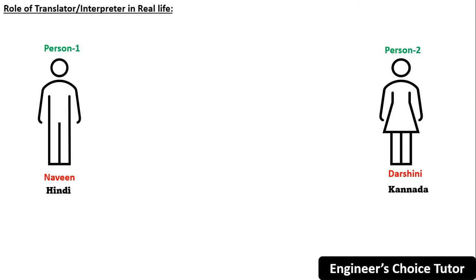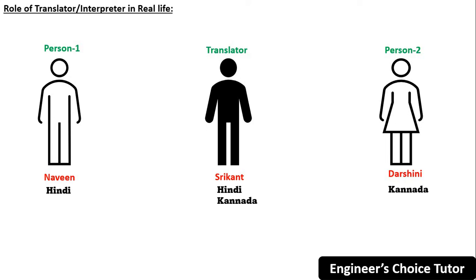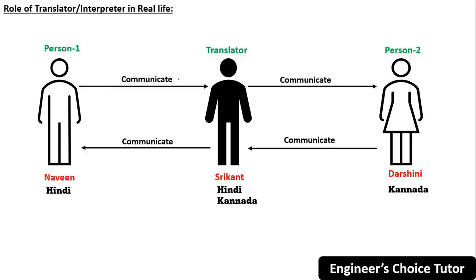So Naveen is there, and there is one more person between them. This person is a translator — his name is Shrikanth, and he knows both Hindi and Kannada. If Naveen says anything in Hindi, this translator will translate and pass the message to Darshini in Kannada language. And if Darshini says something, the translator will convey the message to Naveen in Hindi language after translation. So both can communicate with each other by the help of a translator. This is just an example to explain the role of a translator.